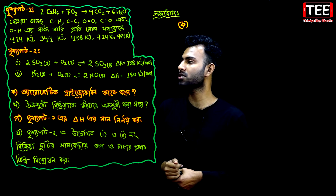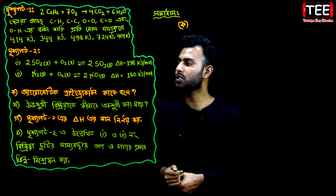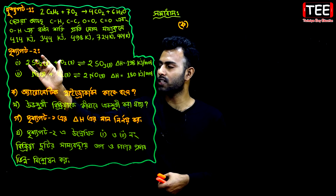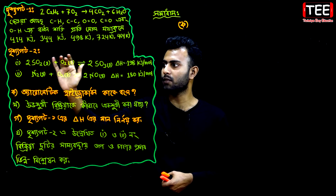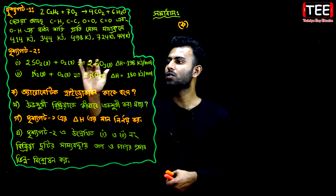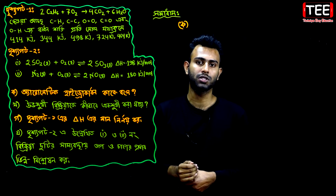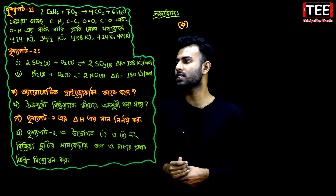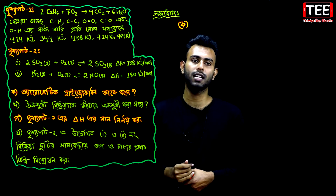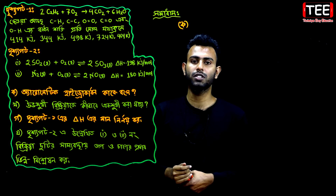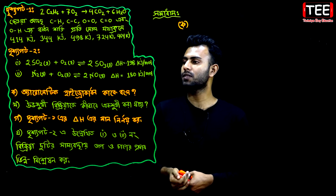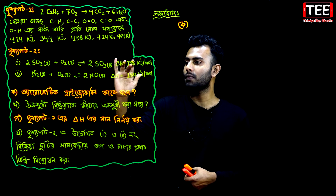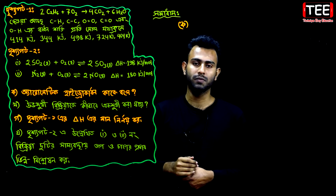We are talking about a certain reaction. We have to look at 2 moles of sulfur trioxide gas being produced, with oxygen gas influencing it. We need to note 2 moles of sulfur trioxide gas. The enthalpy value for this is -190 to -198 kJ/mol.